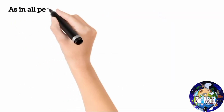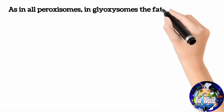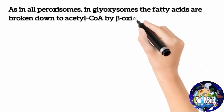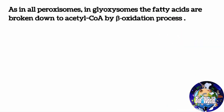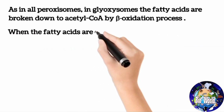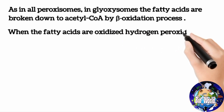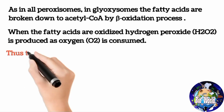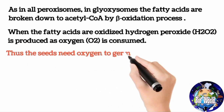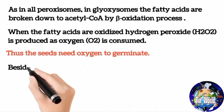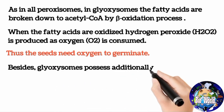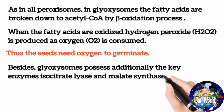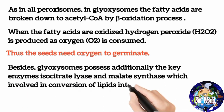As in all peroxisomes, in glyoxysomes the fatty acids are broken down to acetyl-CoA by beta-oxidation. When the fatty acids are oxidized, hydrogen peroxide is produced as oxygen is consumed, meaning that seeds need oxygen to germinate. Glyoxysomes additionally possess key enzymes isocitrate lyase and malate synthase, which are involved in the conversion of lipids into carbohydrates.